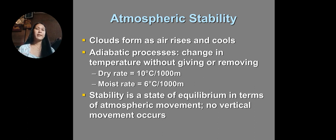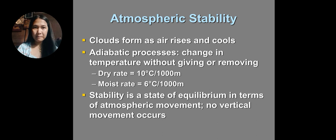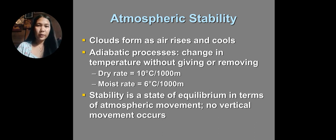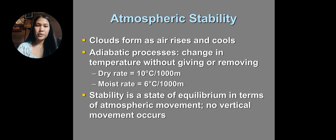Atmospheric stability is when clouds form as air rises and cools. This involves what is called adiabatic processes — the change in temperature without giving or removing heat. The dry adiabatic lapse rate is equal to 10°C per 1000 meters. The moist adiabatic lapse rate is equal to 6°C per 1000 meters.